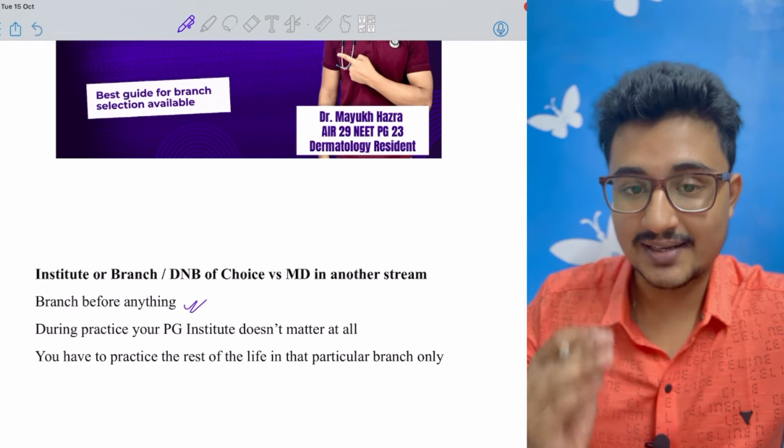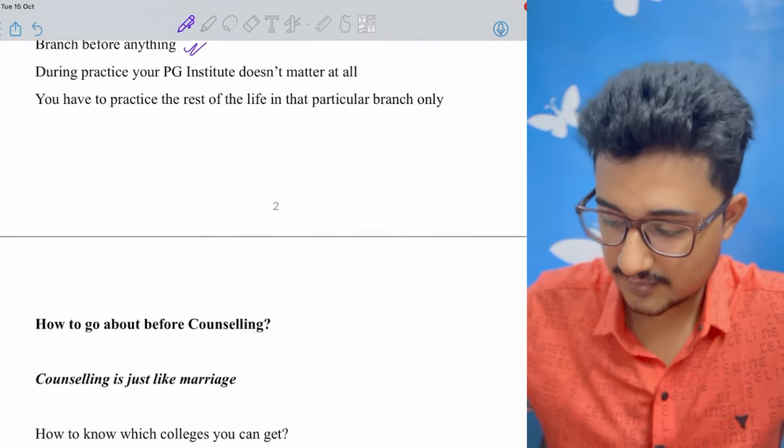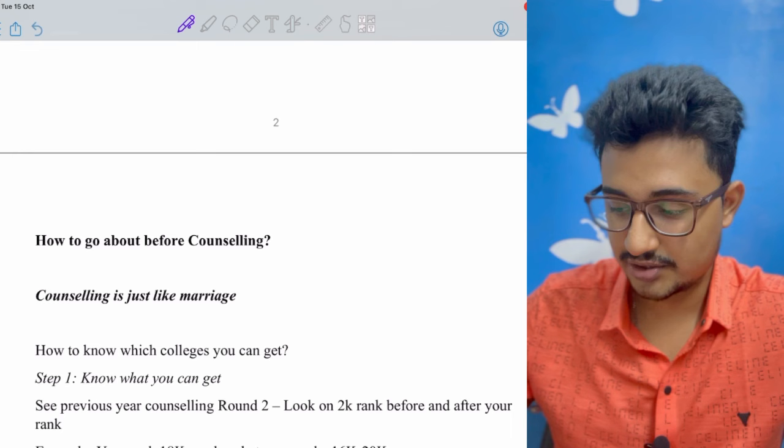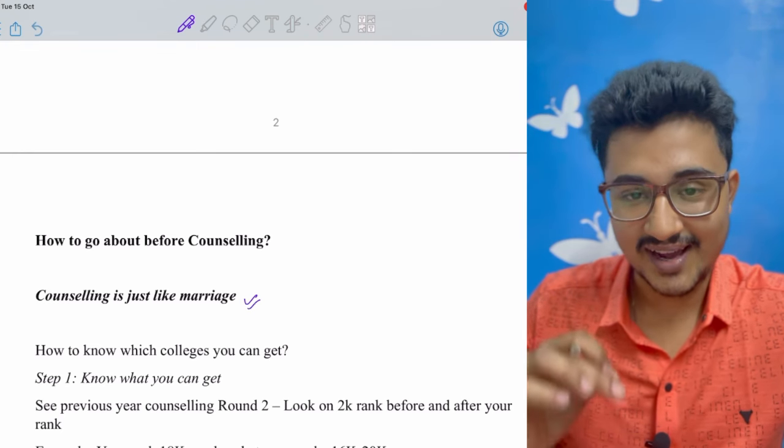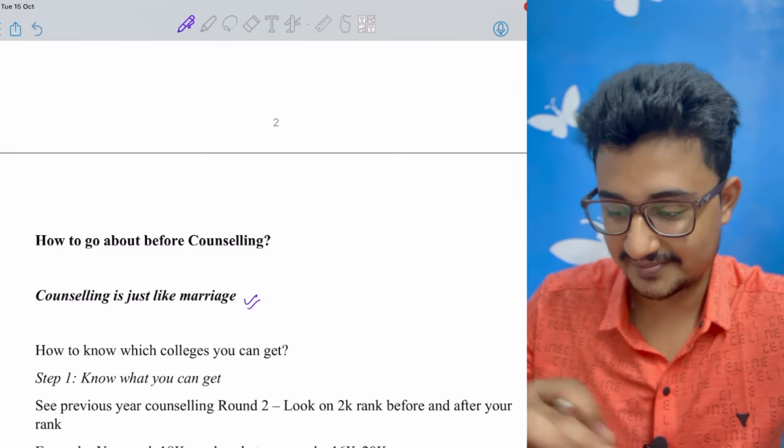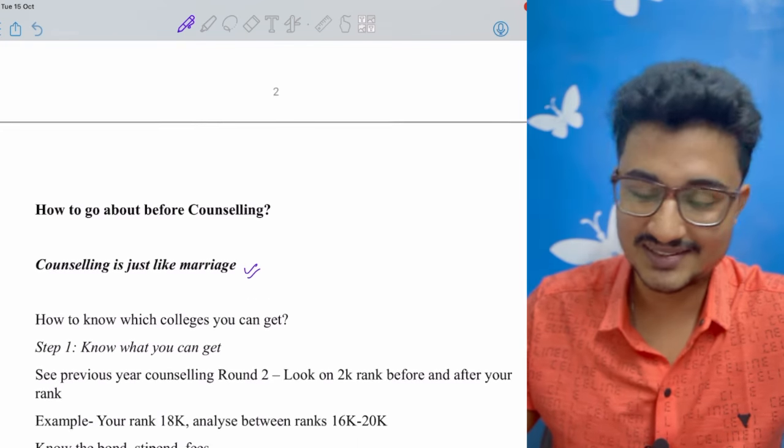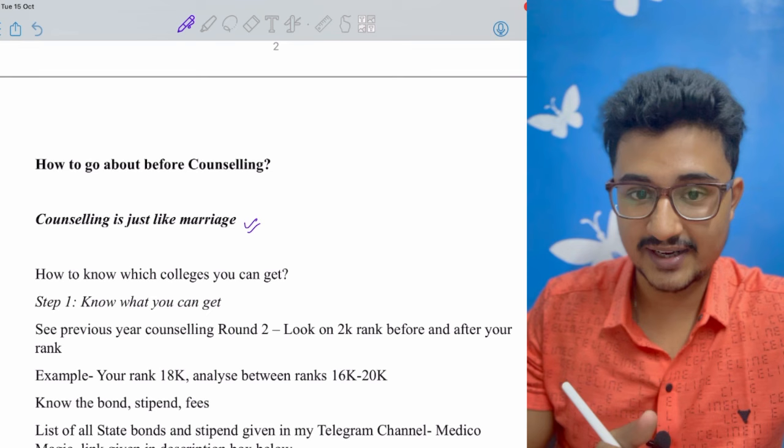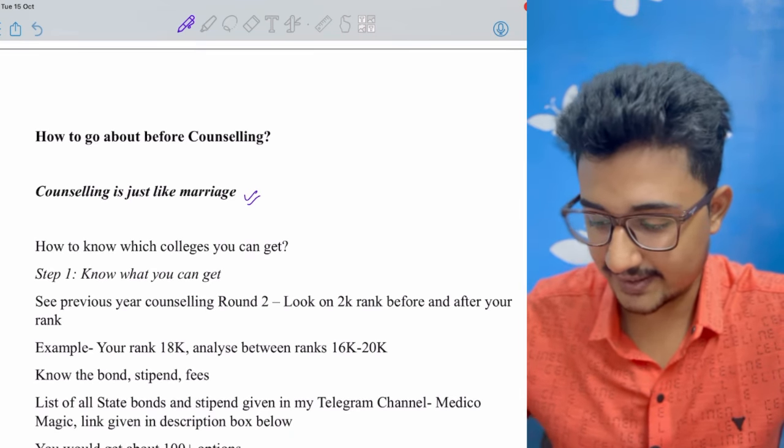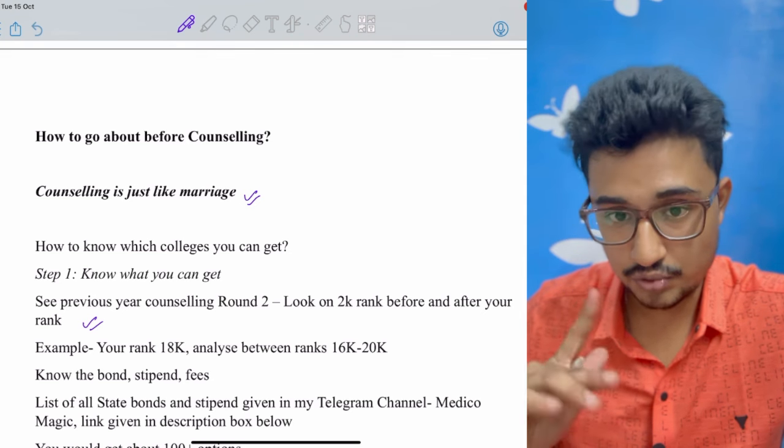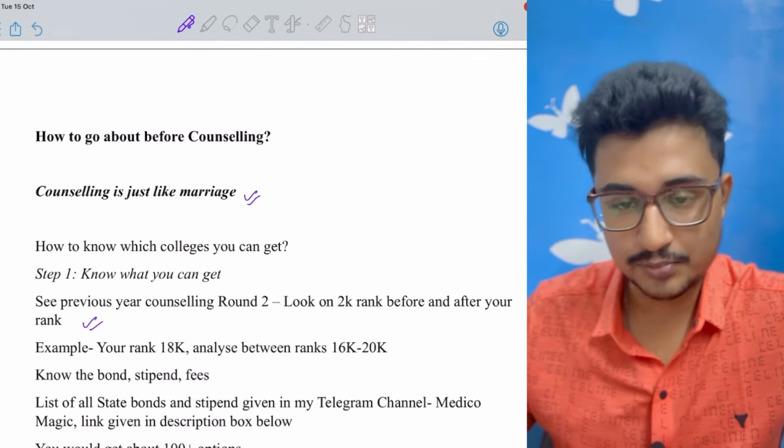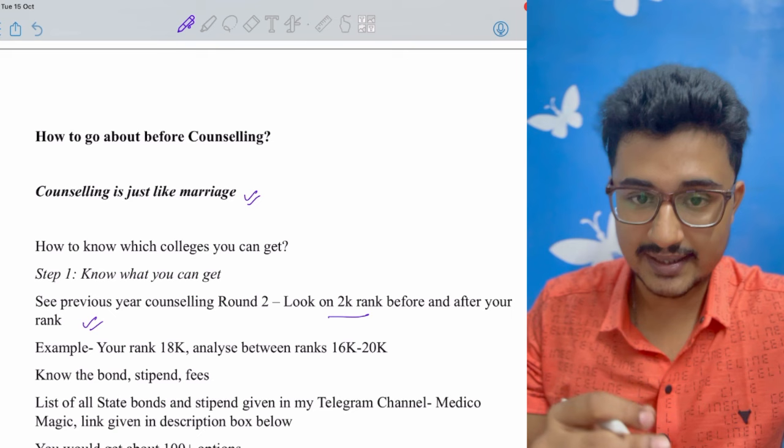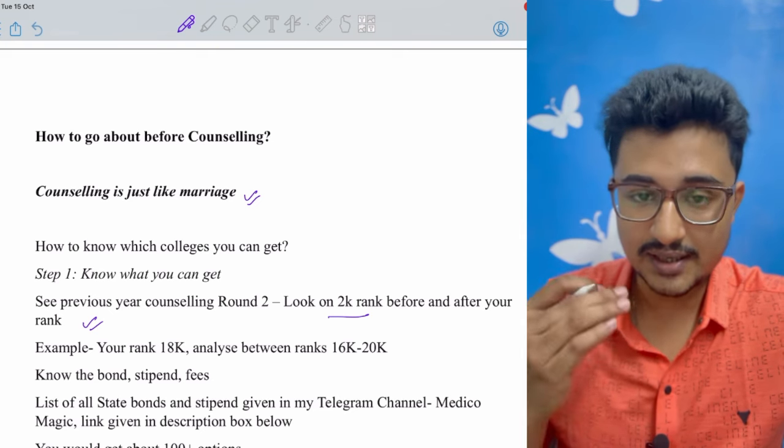Now this is the most important part - the counseling part. Counseling is just like a marriage. You have to take a good decision and that is going to stay for the rest of your life and you can't repent later, or else you have to leave just like marriage. I have divided it into four steps to make it more simplified and systematic. How to know which college you can get? See from the previous year cutoff round two. You would get a better idea. Suppose you have a rank, 2000 before the rank and 2000 after the rank, see which all streams they are getting.